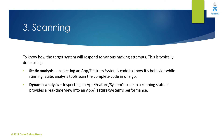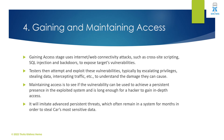Scanning is about knowing how the target system will respond to various hacking attacks. This is typically done through static analysis and dynamic analysis. In static analysis, we inspect an app, feature, or automotive system's code to understand its behavior while running — static analysis tools scan the complete code in one go. Dynamic analysis is inspecting an automotive app or system's code in a running state, providing a real-time view into the app or system's performance.